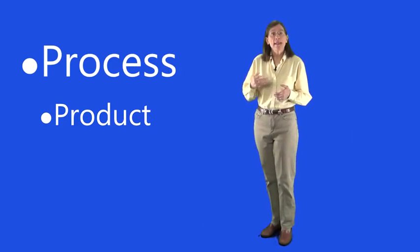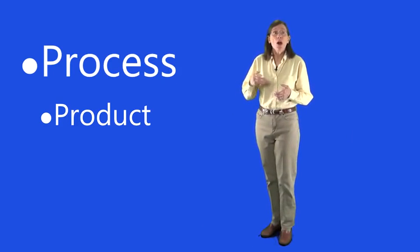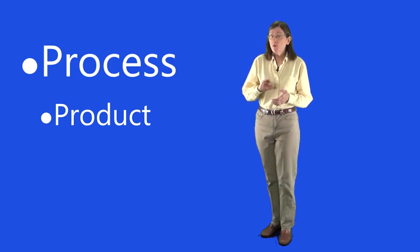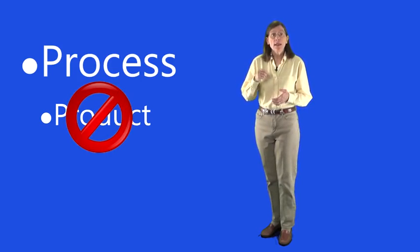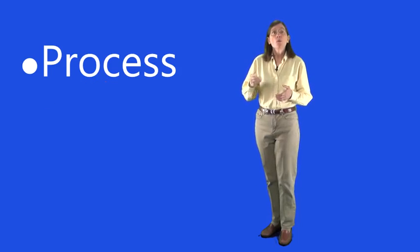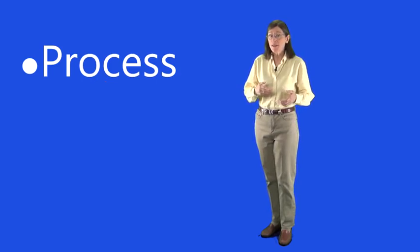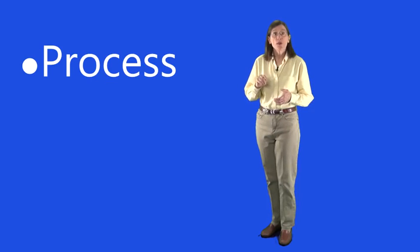Product is an outcome. For example, a homework assignment that you need to finish. To prevent procrastination, you want to avoid concentrating on product. Instead, your attention should be on building processes. Processes relate to simple habits, habits that coincidentally allow you to do the unpleasant tasks that need to be done.